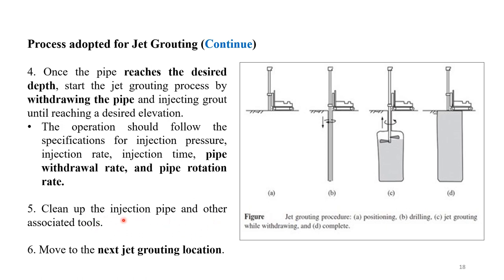After completing grouting at one location, clean up the injection pipe and associated tools, then move to the next location. Today's lecture covered the various types of grouting materials — suspension grout, solution grout, and emulsion grout — and the types of grouting: permeation, compaction, hydrofracture, compensation, and jet grouting.